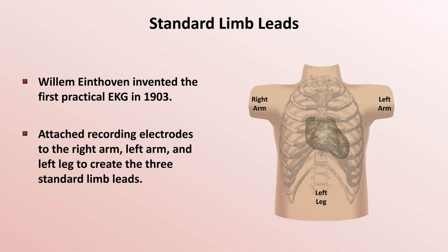First, lead 1 has the right arm as the negative pole, and left arm as the positive pole. Next, lead 2 has the right arm as the negative pole, and the left leg as the positive pole.